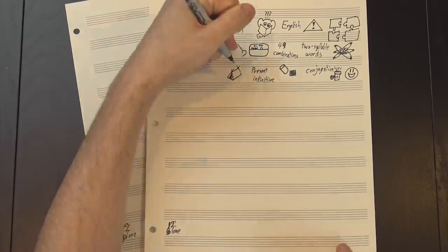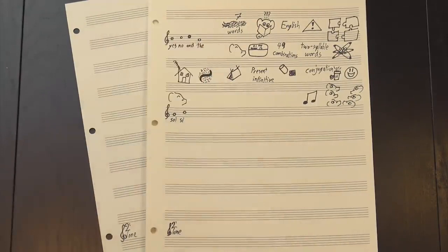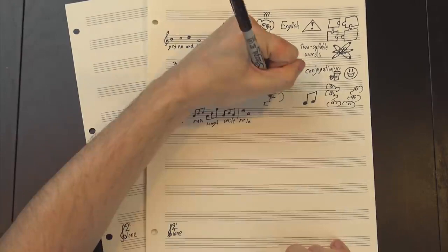But where things get really interesting are the larger words, which have the room to build in some structures. Three-syllable words are loosely divided into groups of six based on the first two notes. Words starting with sol-si are based on fun and games, including run, laugh, and smile. Words starting with re-la, on the other hand, are negative traits like misanthropy, distrust, and intolerance.